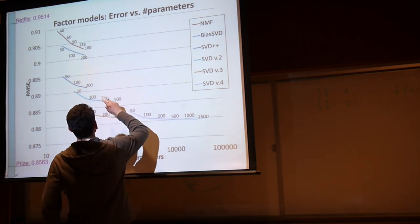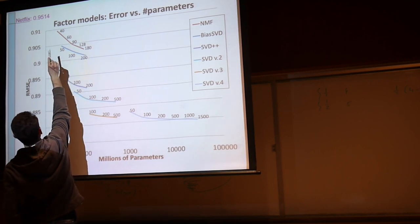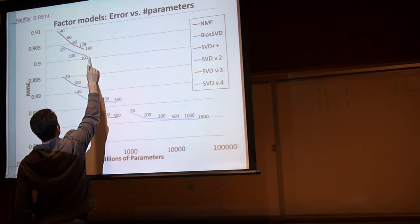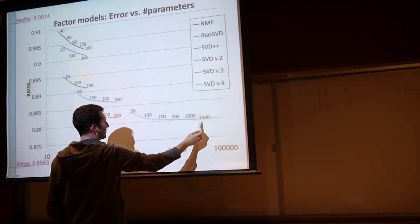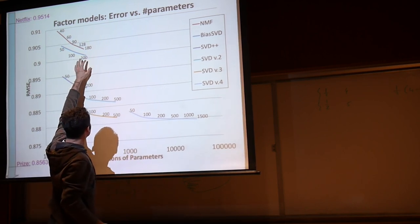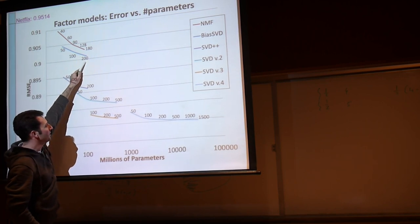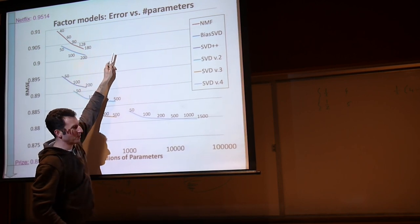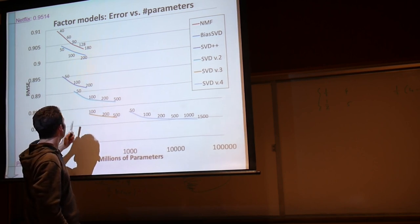This is what you get with non-negative matrix factorization. The Netflix contest started at 0.95 up there, and so you're actually not doing too bad. It's not great, and at the end of this unit will get you here. Things will improve, but you can already see some benefit. As you add more parameters, you tend to do better.